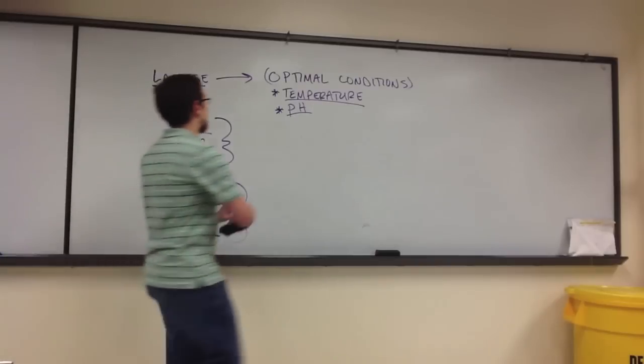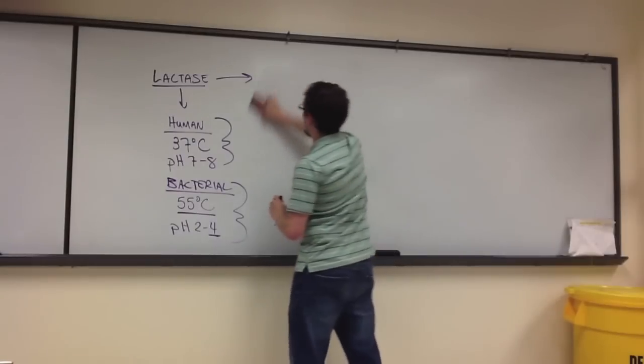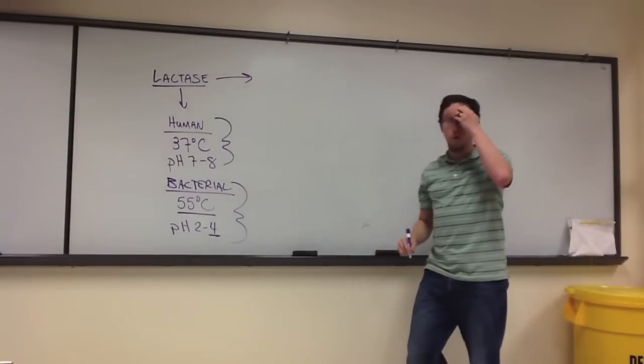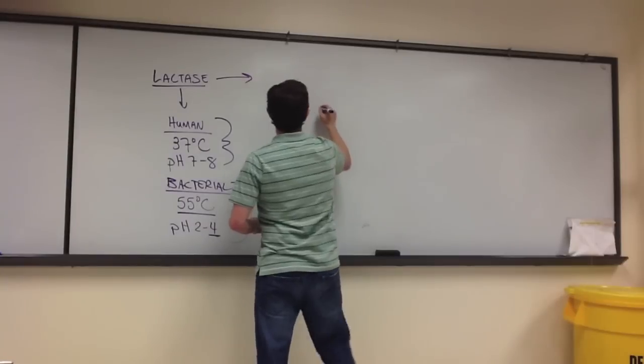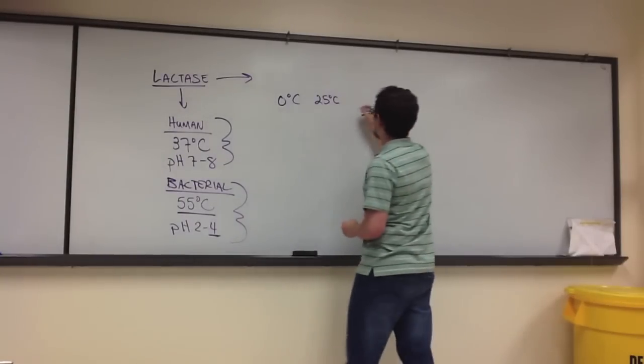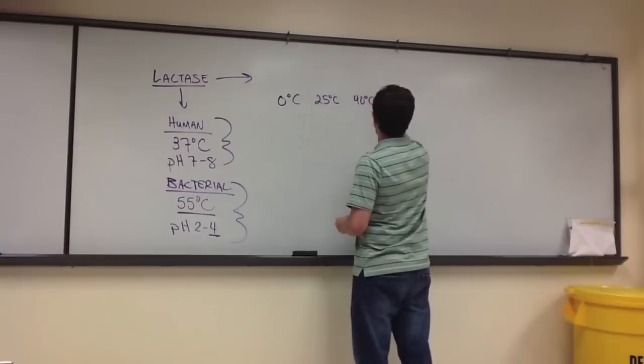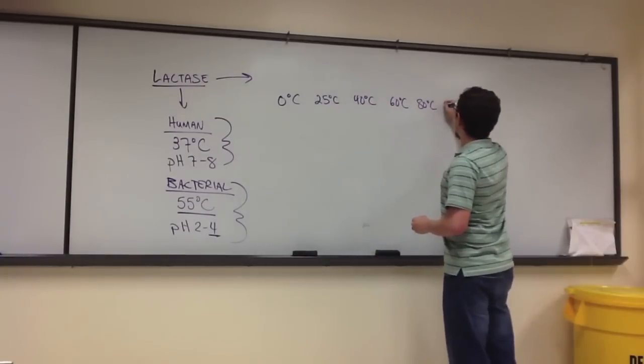So what did you do in this exercise? Well, the first thing we did was we attempted to determine the optimal temperature. So we measured the activity of the enzyme at a variety of temperatures. We did 0 degrees, 25, 40, 60, 80, and 100.